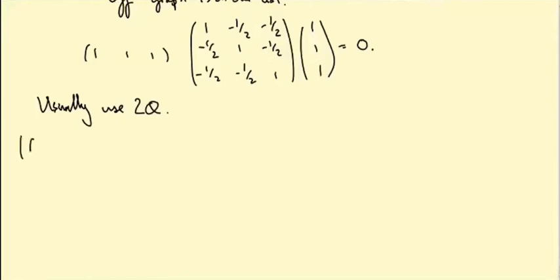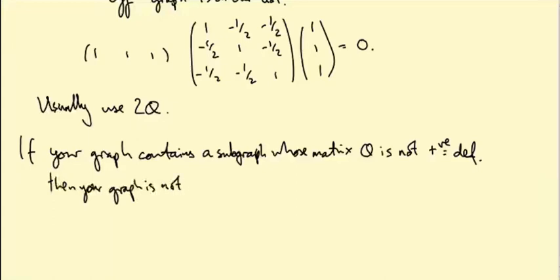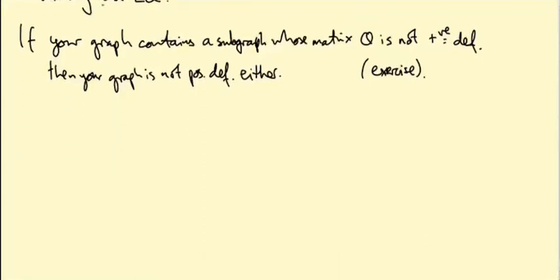First you would say if your graph contains a subgraph whose matrix Q is not positive definite, then your graph is not positive definite either. So that's an exercise. And then you just need to find a suitably large collection of graphs whose matrix is not positive definite. So we just said, you know, the triangle works, a triangle graph on three vertices, but actually any cycle works.